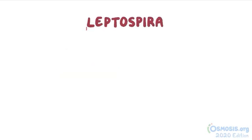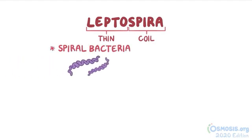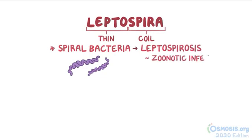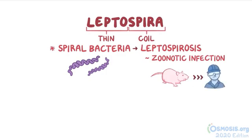With leptospira, lepto means thin and spira means coil. So leptospira is a genus of spirobacteria known to cause leptospirosis, a zoonotic infection, meaning it can be transmitted from animals like rodents to humans, especially people who work in sewers and waters contaminated by these animals' urine.